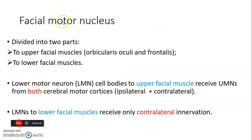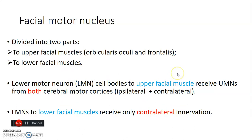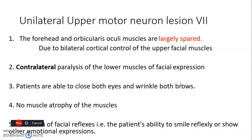The facial nucleus in the brain stem has a part innervating the upper facial muscles and a part to the lower facial muscles. The cell bodies of lower motor neurons to the upper facial muscles receive upper motor neurons from both cerebral motor cortices. So the nerves going to the upper part of the face receive control from both the right and left cerebral cortices, but the lower motor neurons to the lower parts of the face only receive control from the opposite cerebral cortex.